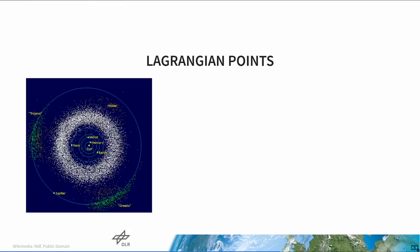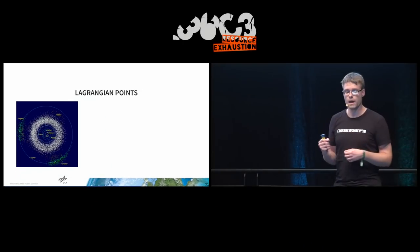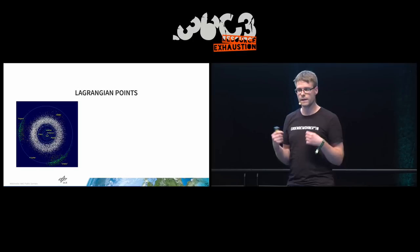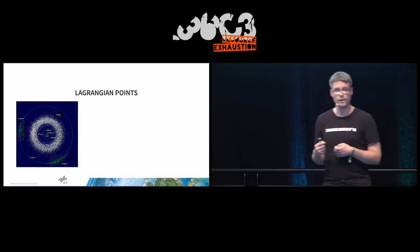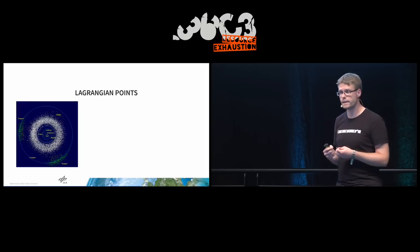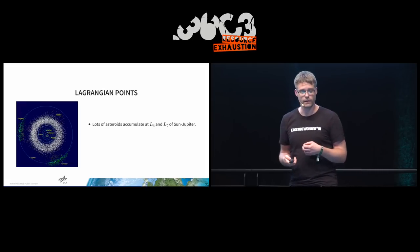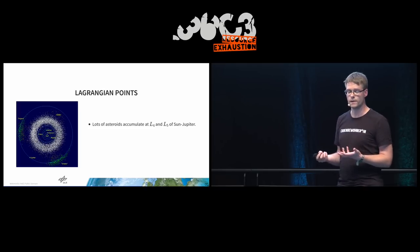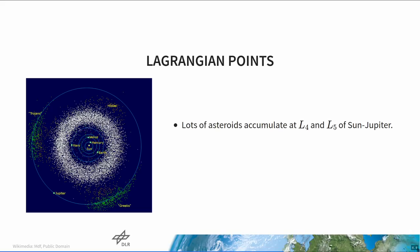Is there actual evidence that Lagrangian points exist? We can look at the solar system. In the inner solar system, in the center is the Sun, and to the lower left is Jupiter. If you imagine an equilateral triangle of Sun and Jupiter — there are two of them — you see all these green dots: those are asteroids, the Trojans and the Greeks. They accumulate there because L4 and L5 are stable. So we can really see this dynamics playing out in the solar system.